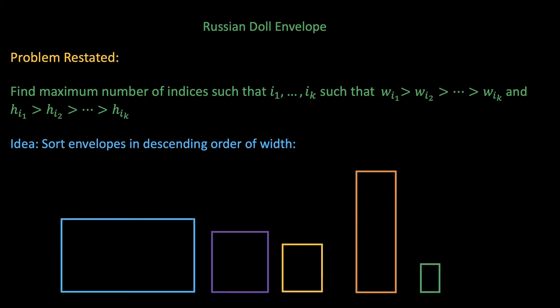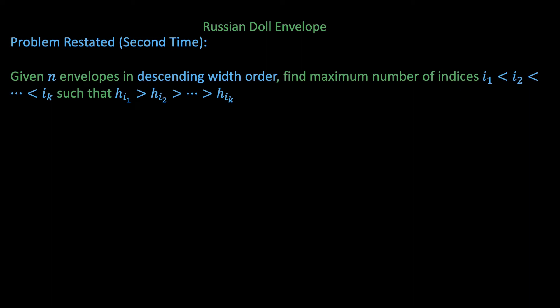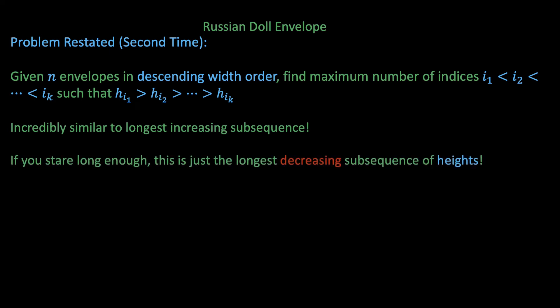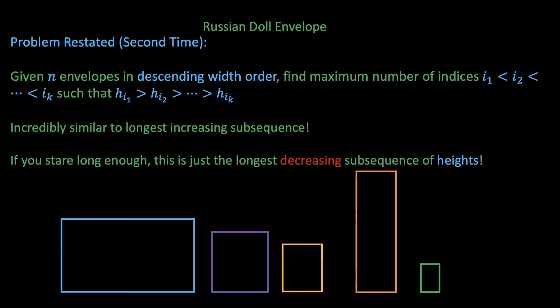Now what does our problem become? We again want to find the maximum number of increasing indices, not just indices but increasing indices such that the heights are strictly increasing. This problem now feels extremely similar to the longest increasing subsequence. In fact, if you stare long enough, you realize that it's actually the longest decreasing subsequence problem on the heights. If you imagine that all the envelopes are sorted in decreasing order of width, then the longest decreasing subsequence in terms of the heights is what we're looking for.